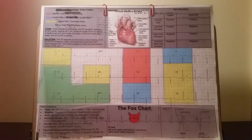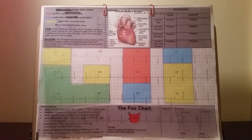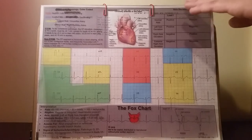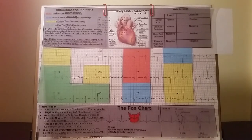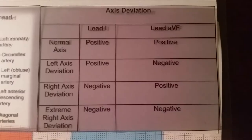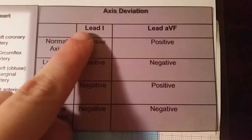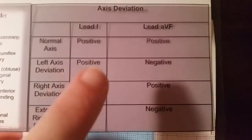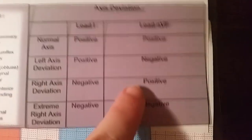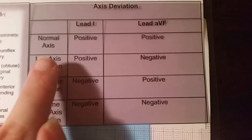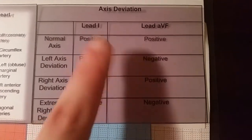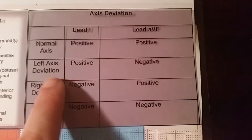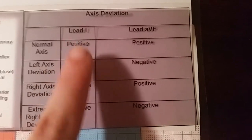In addition to identifying lead groupings, the FOX chart has an axis deviation chart. Leads 1 and AVF are used when identifying axis deviation. For example, if lead 1 is positive and lead AVF is negative, then we have a left axis deviation. This chart can be used to identify anything from a normal axis to extreme right axis deviation.